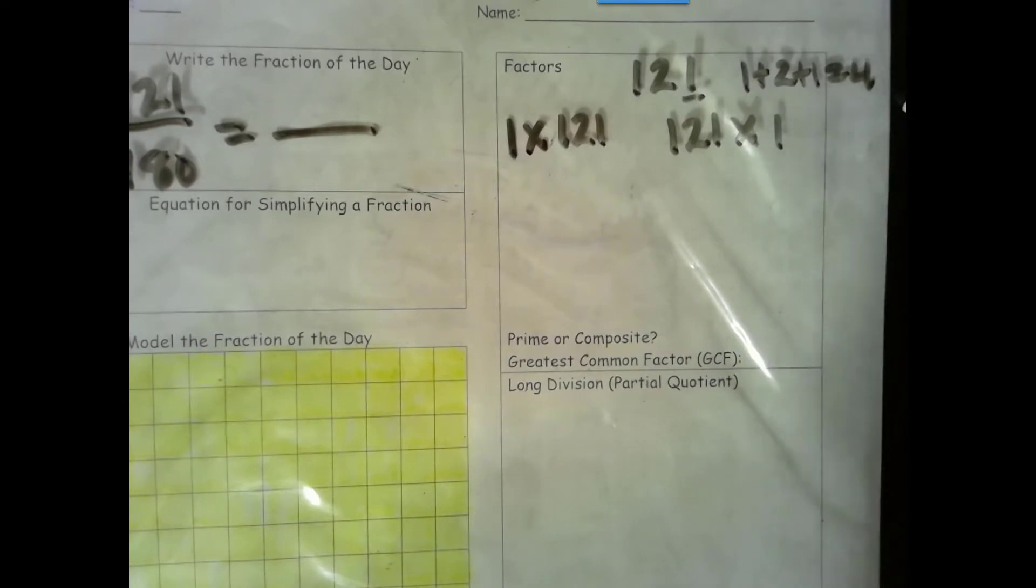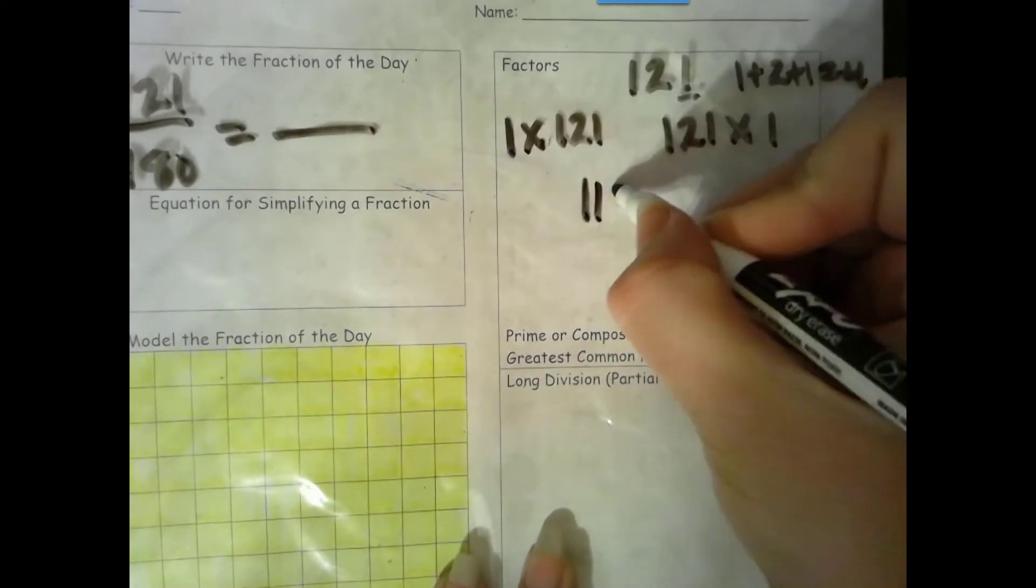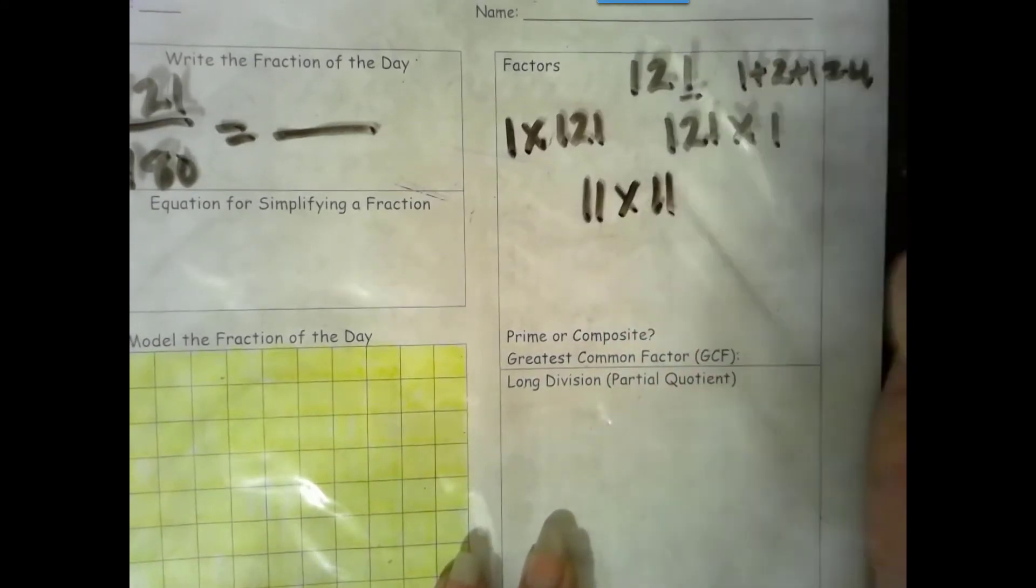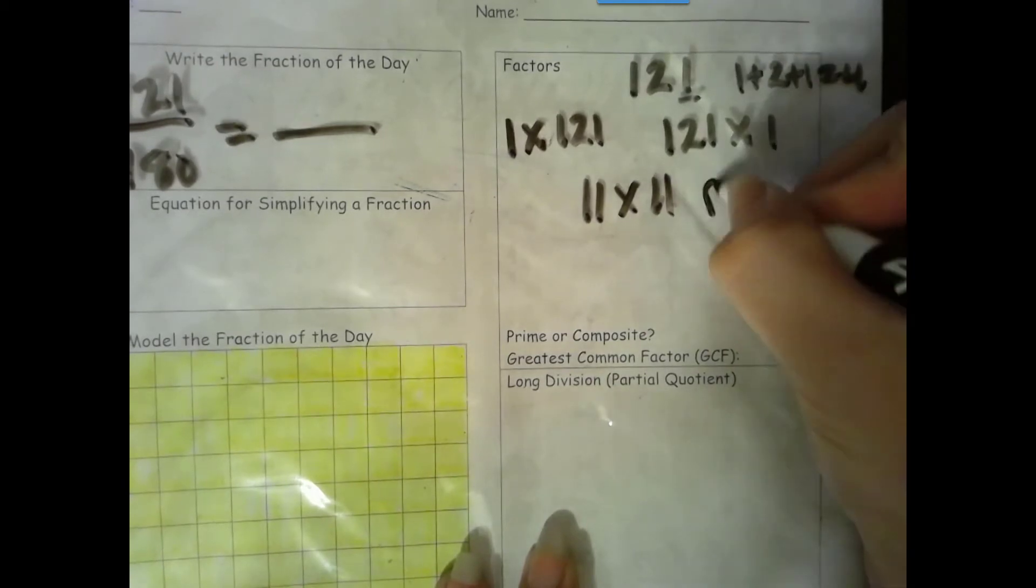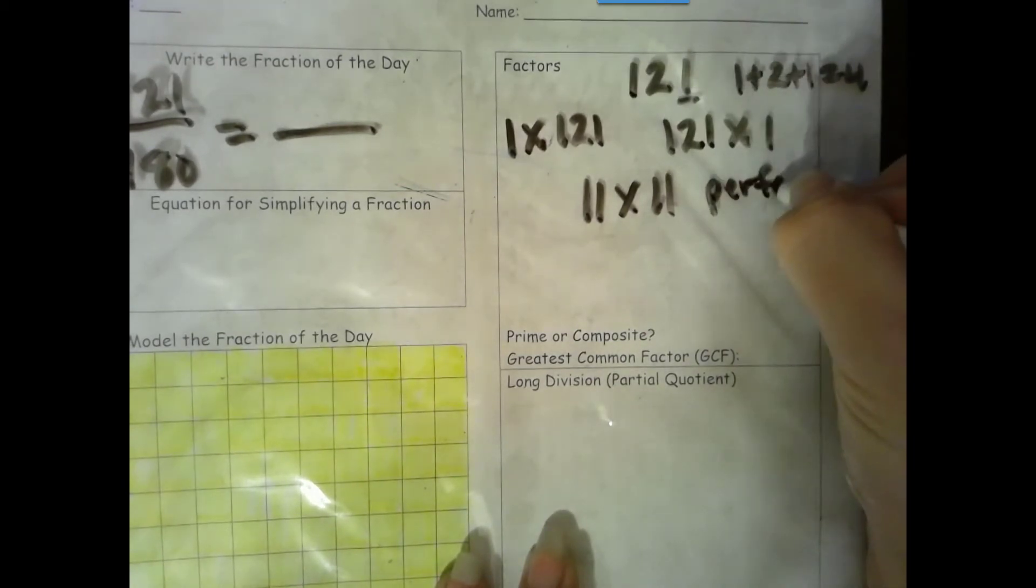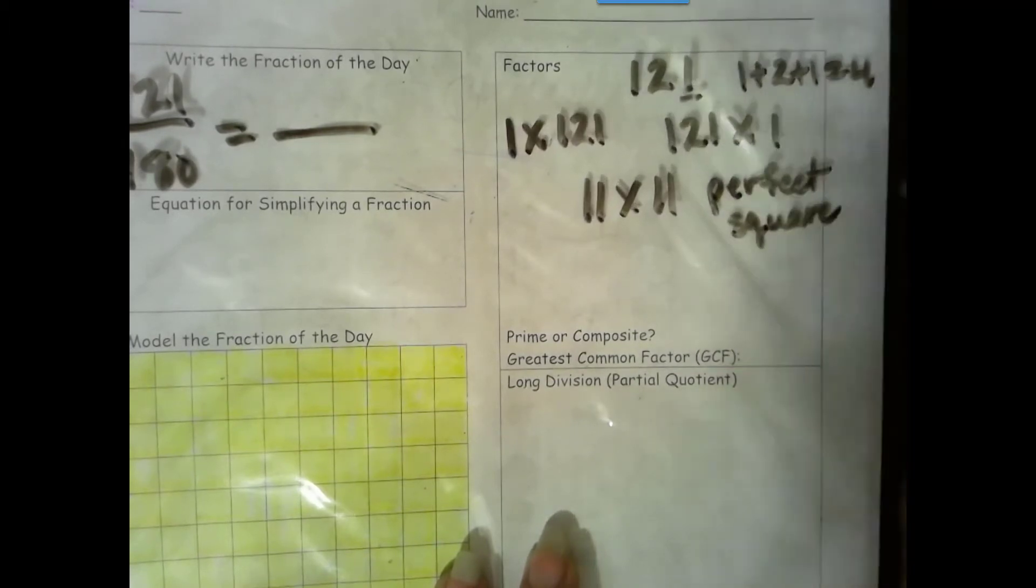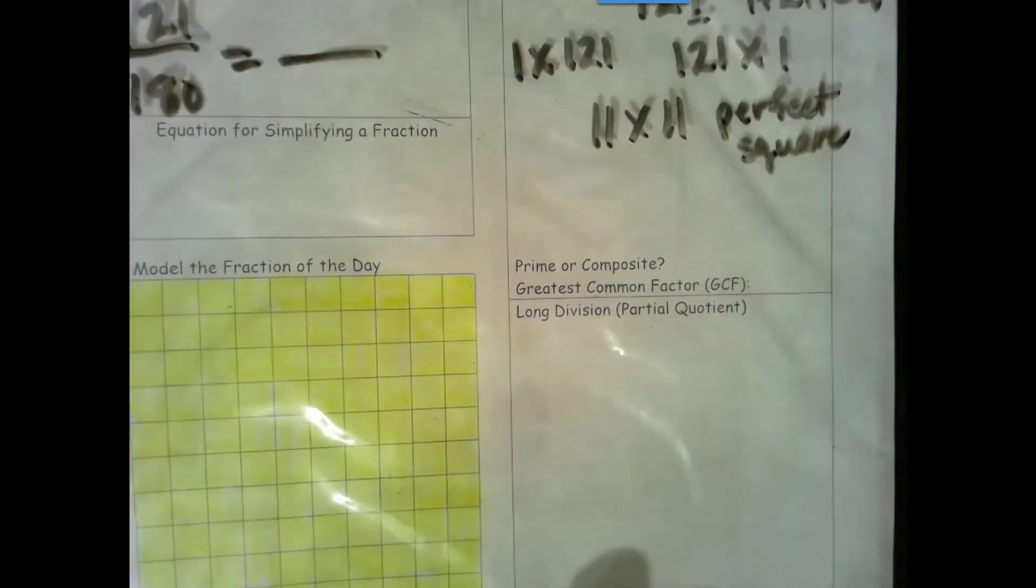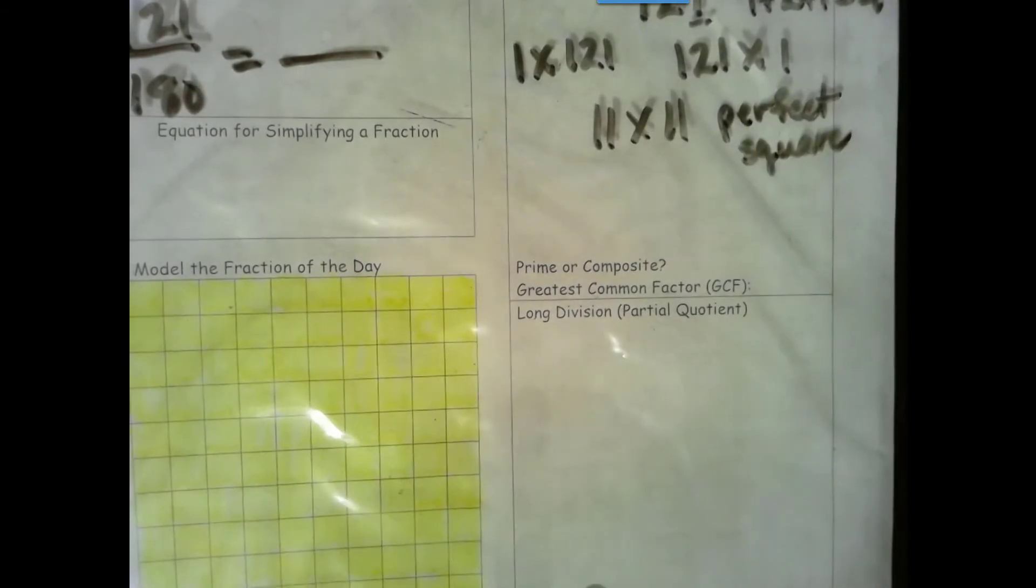We try 11. 11 times 10 is 110, then 121. 11 is a factor. 11 times 11. So that means this is a perfect square. There are no numbers between 11 and 11, so we are done.